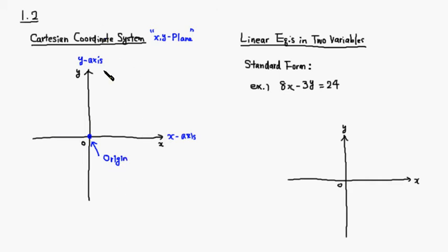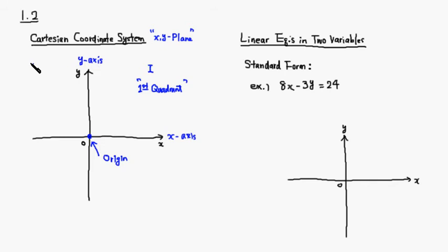These two axes divide the entire plane into four separate sections, and these are called quadrants. This one is called the first quadrant. This one is called the second quadrant. We go counterclockwise, and this is called the third quadrant, and this one is the fourth quadrant.